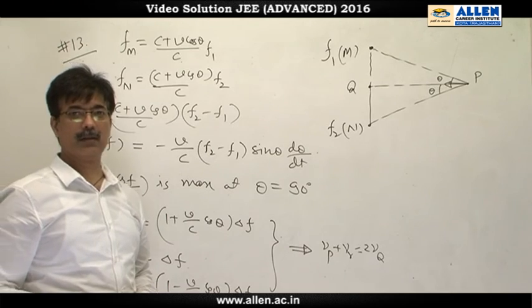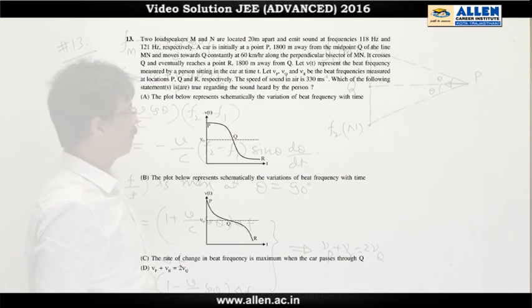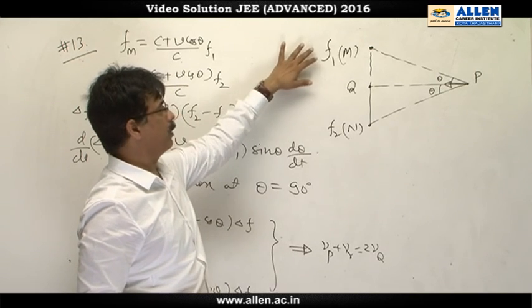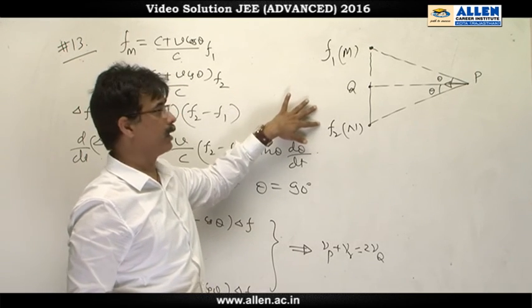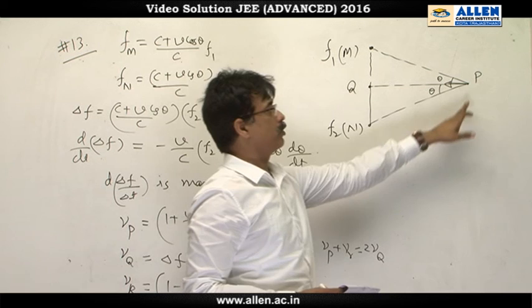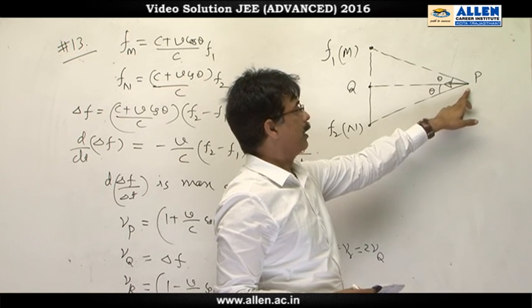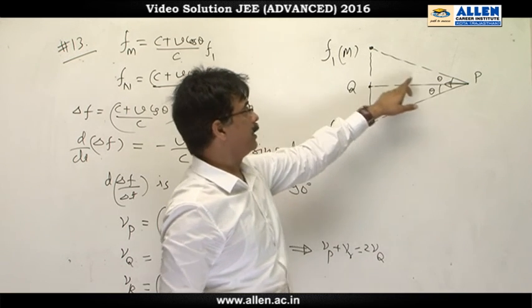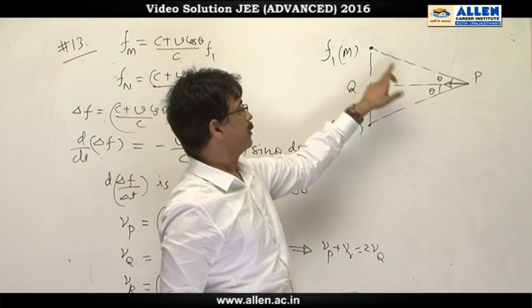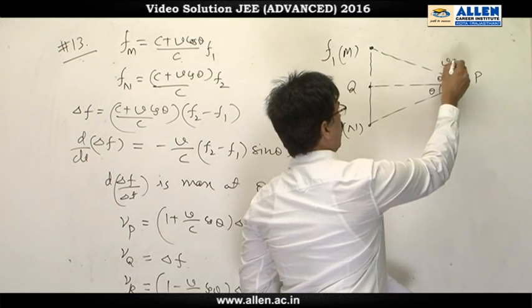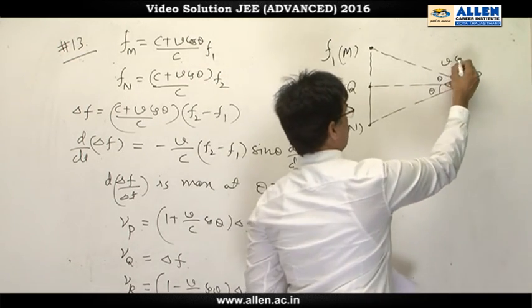Question number 13. This question is based on Doppler effect. We are given that there are two loudspeakers, m and n, which are emitting frequencies f1 and f2 respectively, and the car is approaching. Suppose that at an instant the car is at point p, and position of car makes angle theta. So at this instant, component of velocity along line joining source and listener is v cos theta.